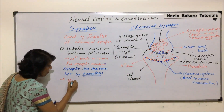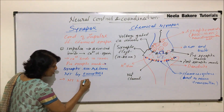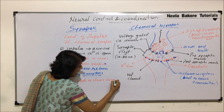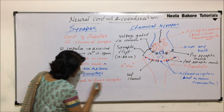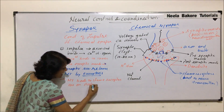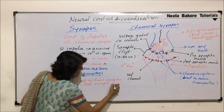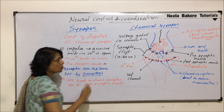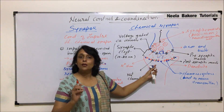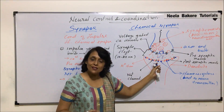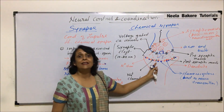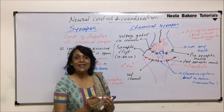As soon as these neurotransmitters are released, they go and bind to chemoreceptors. These chemoreceptors are on the post-synaptic membrane. As soon as this complex of neurotransmitter and chemoreceptor is formed, the membrane permeability changes.